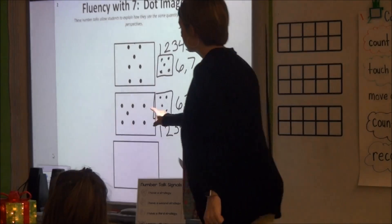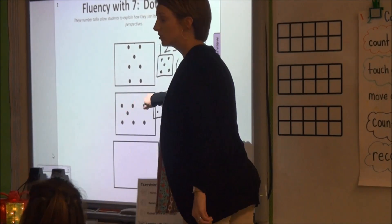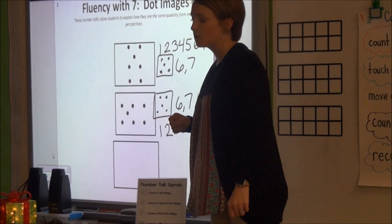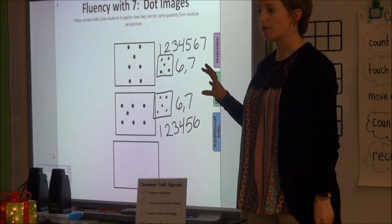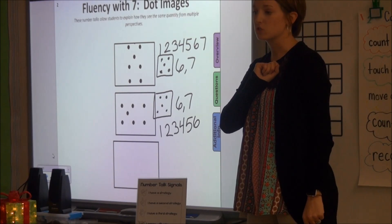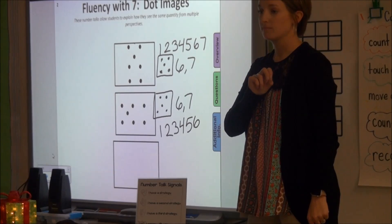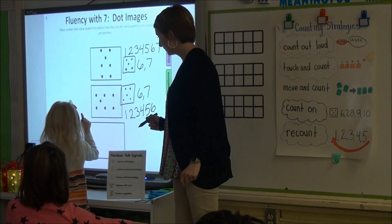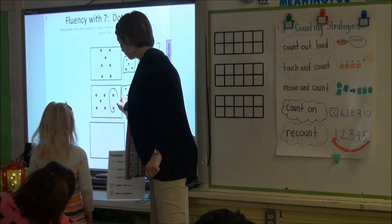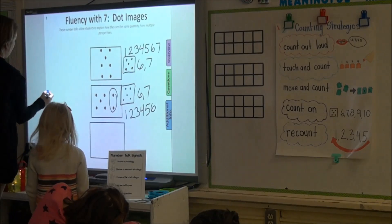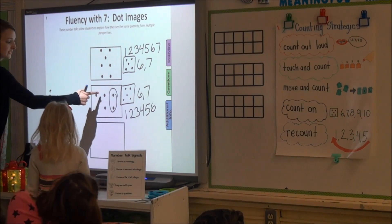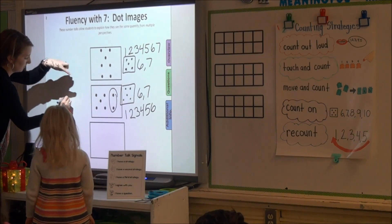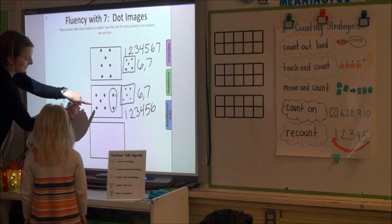Alright boys and girls, a lot of you are subitizing. You're starting with the five over here and counting on — five, six, seven. I want you to look up here and see if there's another way that you can subitize, another set of numbers besides the five that you could start with to count on. Two, three, four, five, six, seven. So Molly said here's two, and then she's going to count on — three, four, five, six.